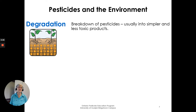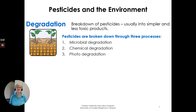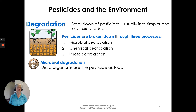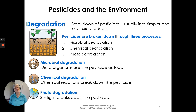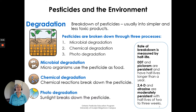Degradation is a breakdown of pesticides, usually into simpler and less toxic products. Pesticides can be broken down by three processes: microbial degradation, where microorganisms use the pesticide as food; chemical degradation, where chemical reactions break down the pesticide; and photodegradation, where sunlight breaks down the pesticide. The rate of breakdown is measured by half-life. DDT and picloram are persistent and have half-lives longer than a year. 2,4-D and atrazine are moderately persistent with half-lives of two to three weeks.